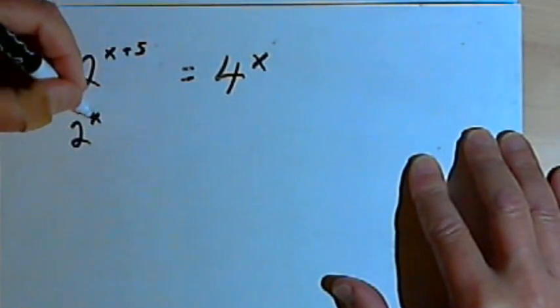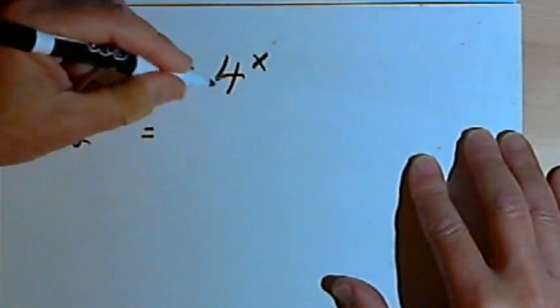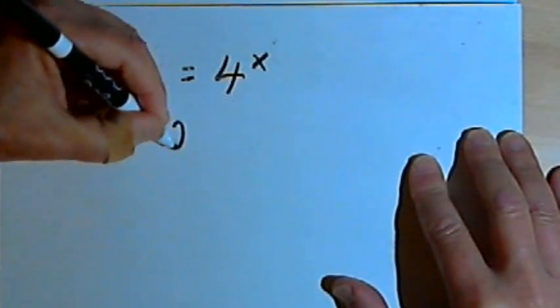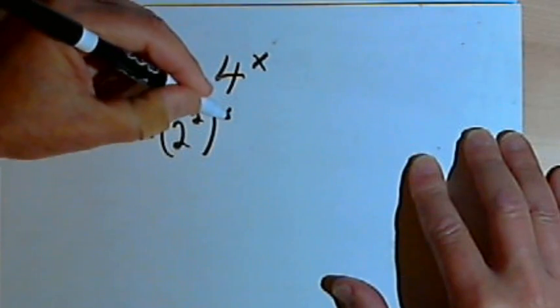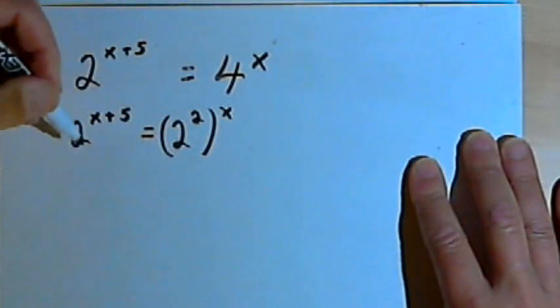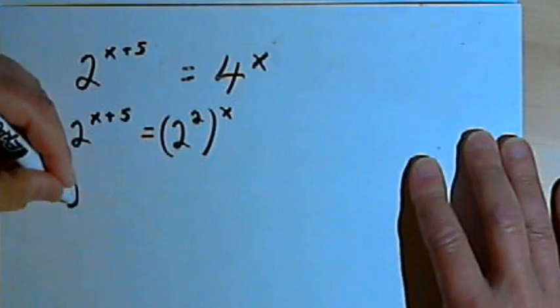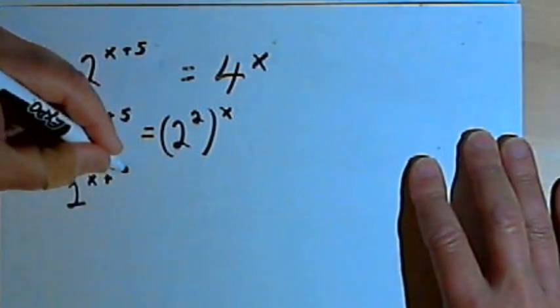I'm still going to have 2 to the x plus 5, but instead of 4, I'm going to write 2 squared, and then I want to raise that to the x power.